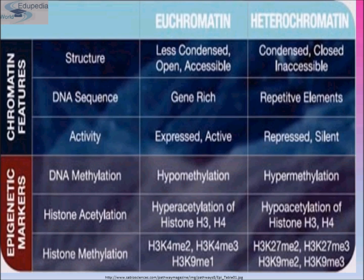Another epigenetic marker is histone acetylation — acetylation means addition of the acetyl group. Hyperacetylation of histone H3 and H4 is seen in euchromatin, and hypoacetylation of histone H3 and H4 is seen in heterochromatin.